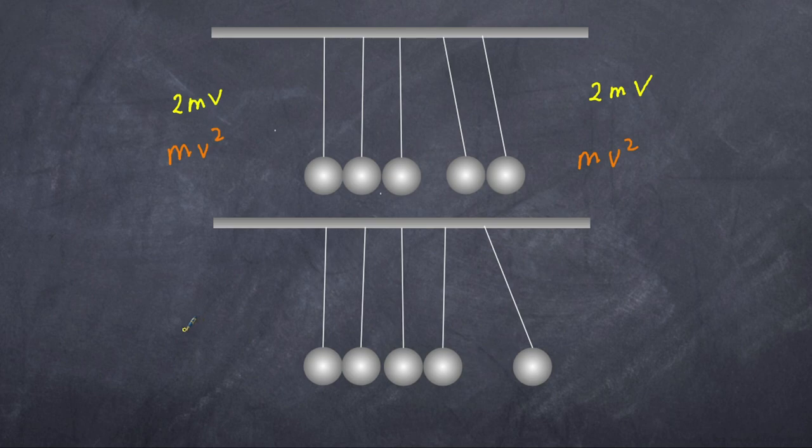We know that the total momentum is in this case 2mv. That means the total momentum after here has to still be 2mv, but we only have one mass. So in other words what we really have is m multiplied by 2v.